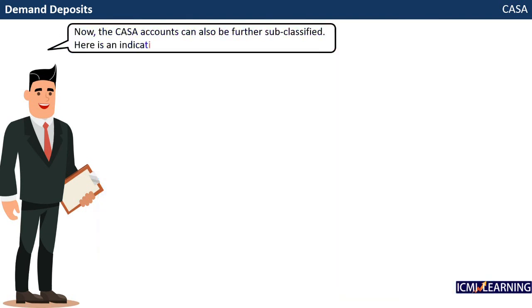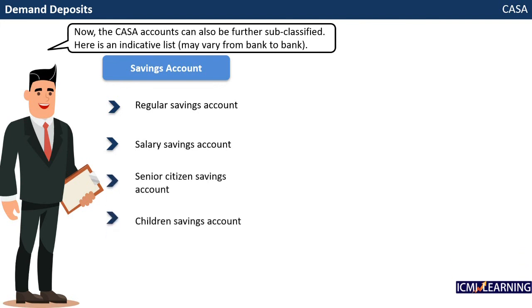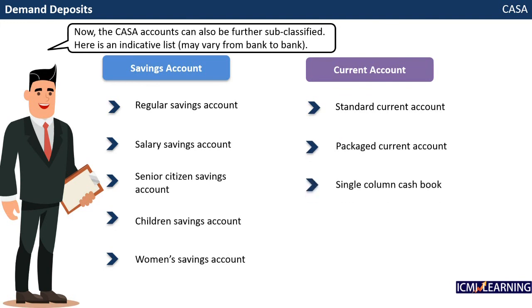The CASA accounts can also be further sub-classified. Here is an indicative list — this may vary from bank to bank. In savings account, there can be: regular savings account, salary savings account, senior citizen savings account, children's savings account, and women's savings account. In current account, it can be: standard current account, packaged current account, single column cash book, premium current account, and foreign currency account.